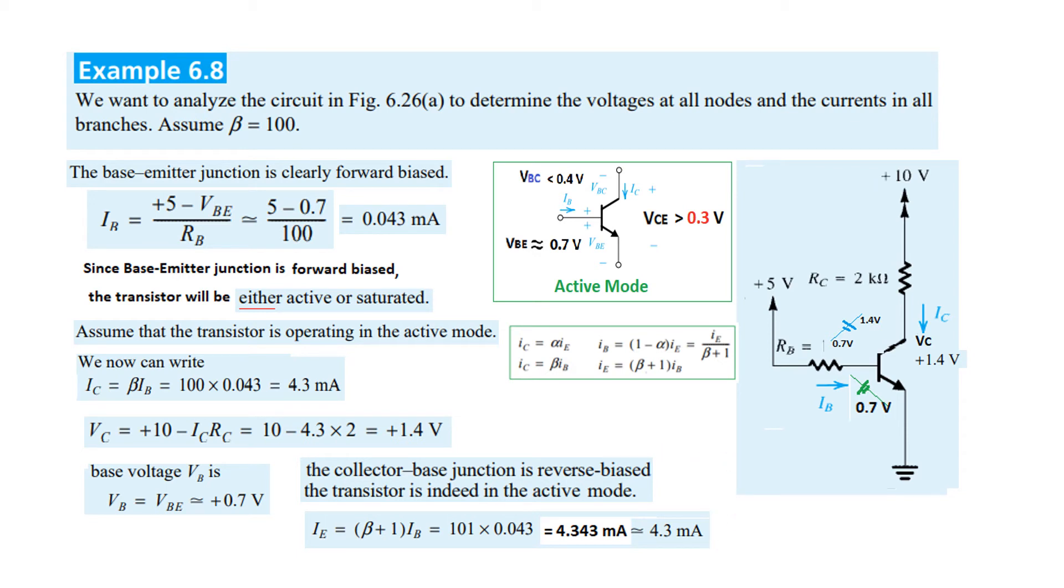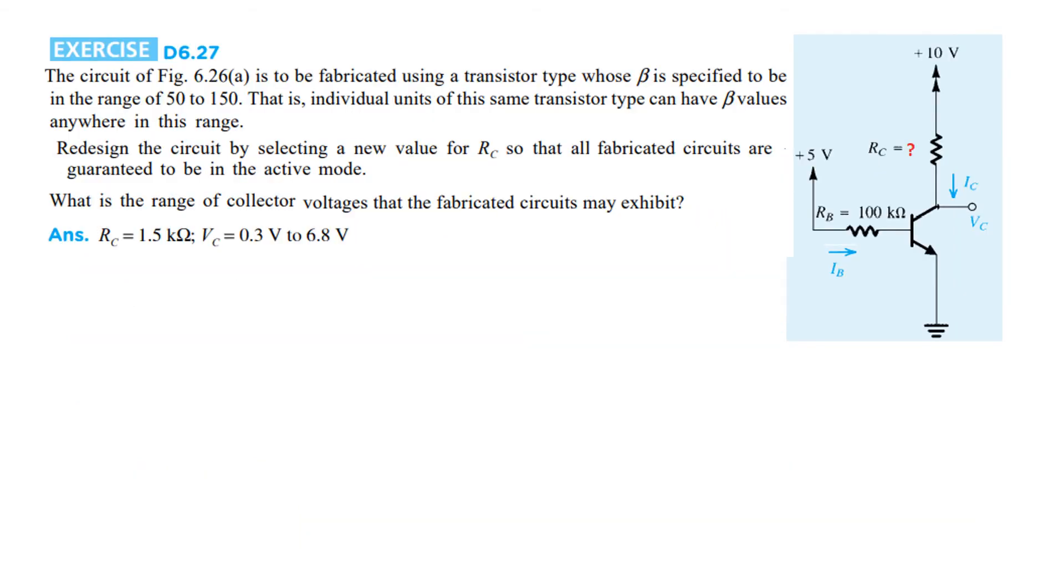Now let's look at Exercise D6.27. The circuit of Figure 6.26a is to be fabricated using a transistor type whose β is specified to be in the range of 50 to 150. So β is not fixed—it will be between this range. Individual units of this same transistor can have β anywhere in this range.